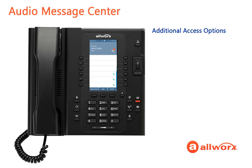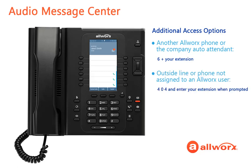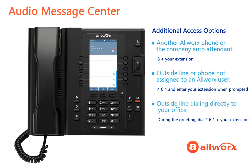To access the Audio Message Center from another AllWorks phone or the company auto attendant, dial 6 and your extension. From an outside line or a phone not assigned to a user, dial 404 and the AllWorks system prompts you for your extension. From an outside line dialing directly to your office, dial star 61 and your extension while the greeting is playing, before the greeting finishes.